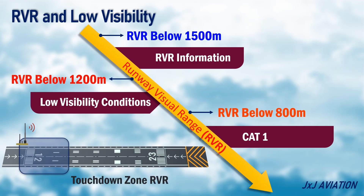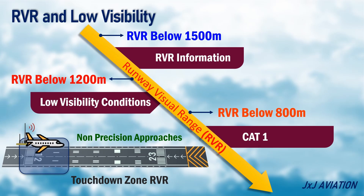CAT-1 operations would include non-precision approaches. For CAT-1 operations, the lowest RVR is 550 meters for the touchdown zone.